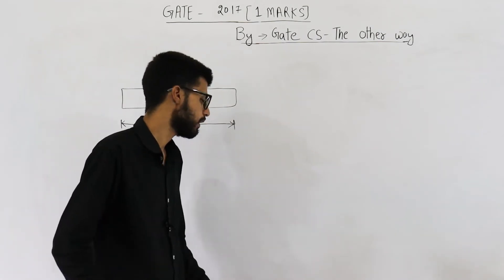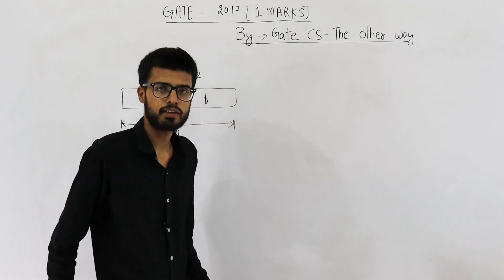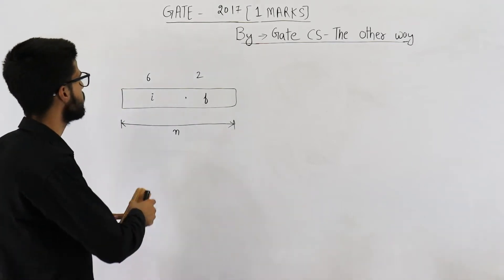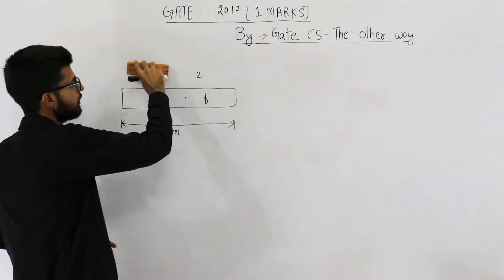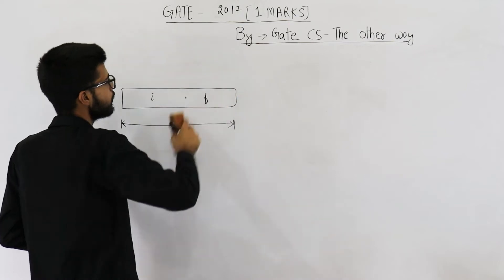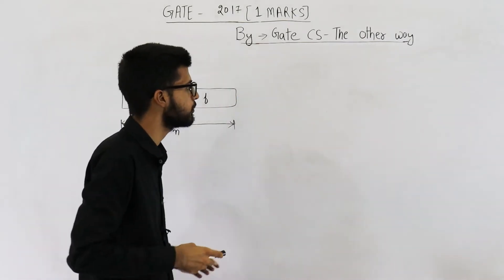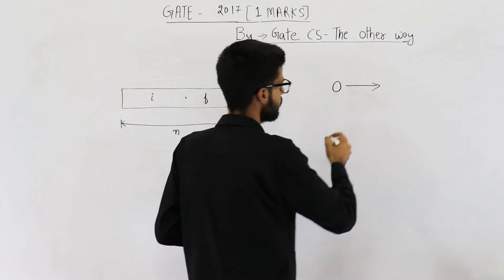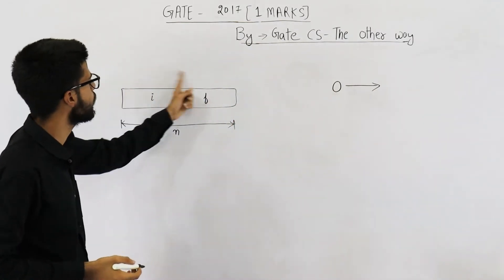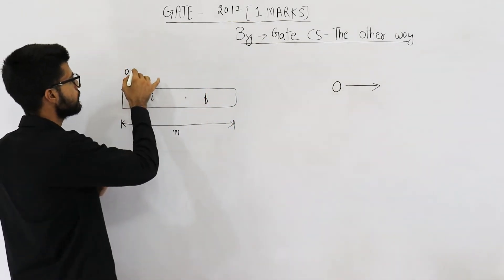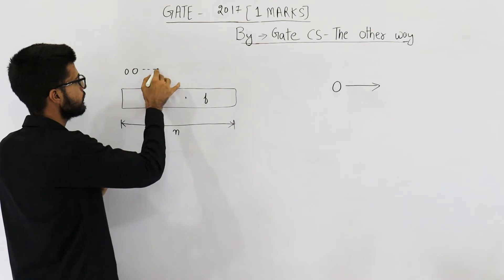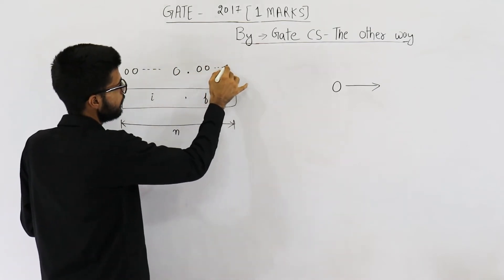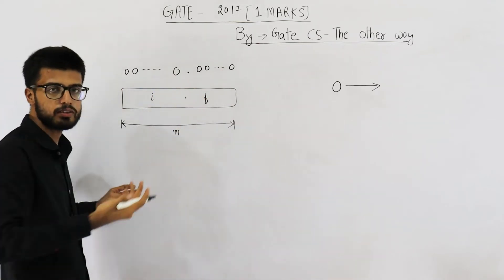We are representing only unsigned values, meaning negatives will not be supported. So the smallest number that can be represented will be 0. You can verify this by substituting all zeros — all zeros in the integer part, dot, all zeros in the fractional part gives 0.0, which is 0.